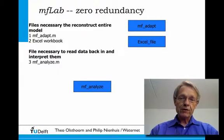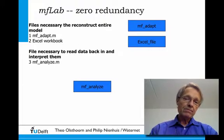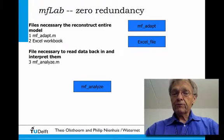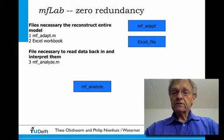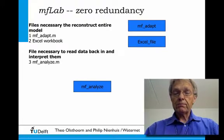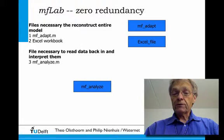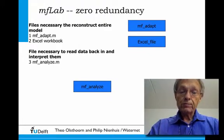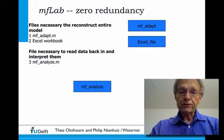You only need three files for a model: two MATLAB scripts — MFADAPT and MFANALYZE — and one Excel workbook. The MATLAB script MFADAPT contains instructions that generate step-by-step the arrays that constitute the model, like the IBound array, the connectivity arrays, the top and bottom of the layers, and the boundaries like the wells and drains. It doesn't contain any data. The Excel workbook is a multi-page container for the parameters that need to be set for the different models.